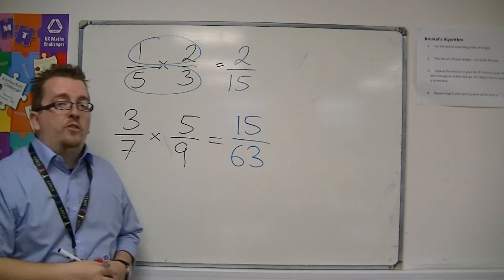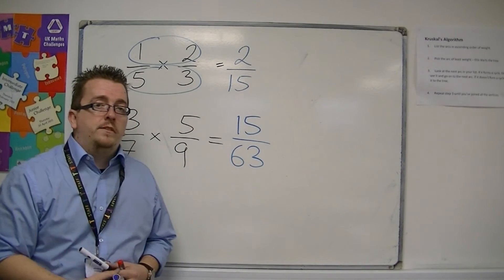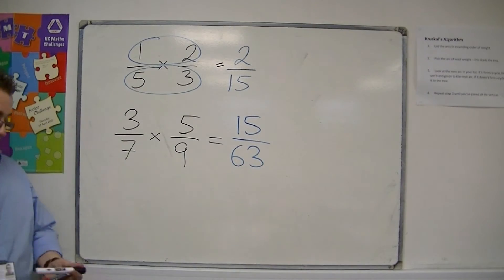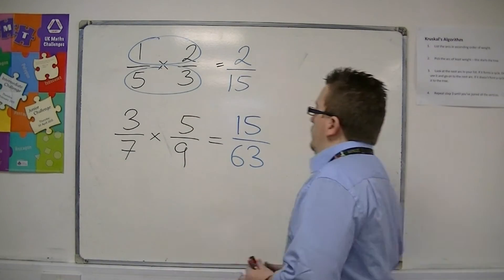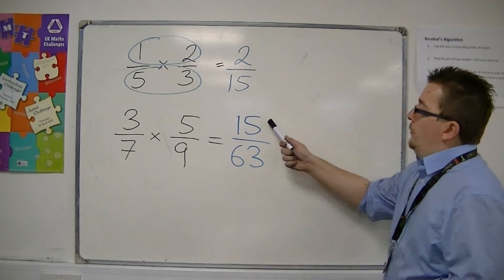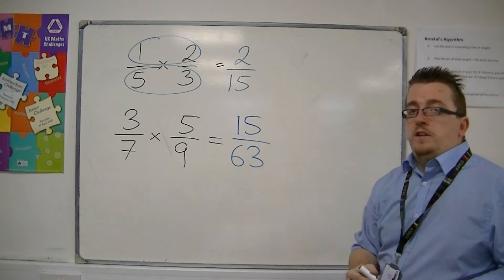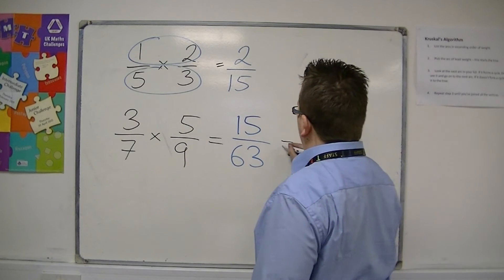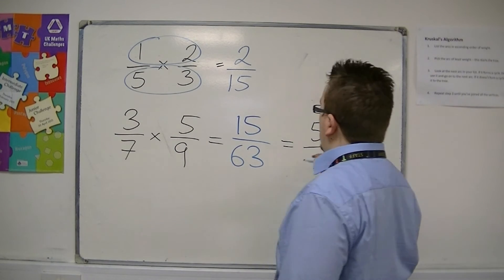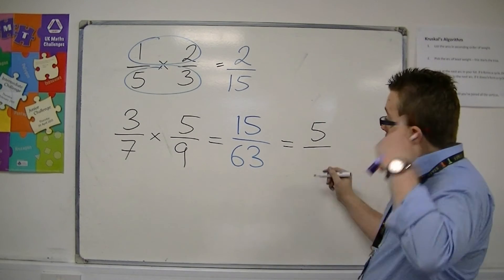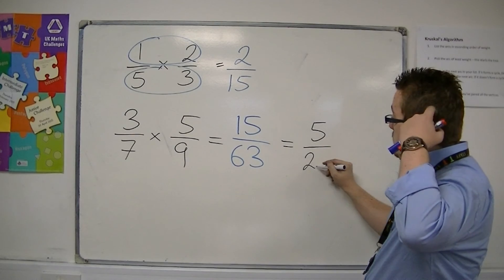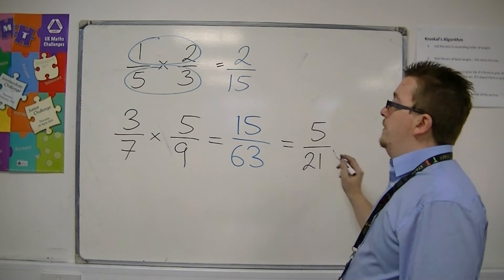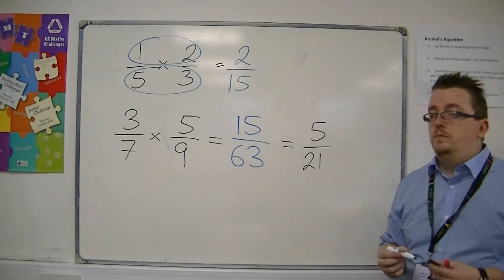And that's how you multiply fractions. This one can be simplified down, so we might as well. Top and bottom can be divided by 3, so we get 5 over 21, and that's as simplified as you can go.